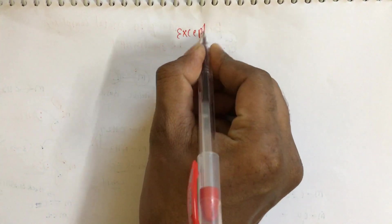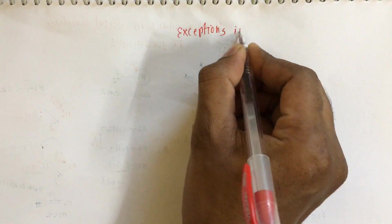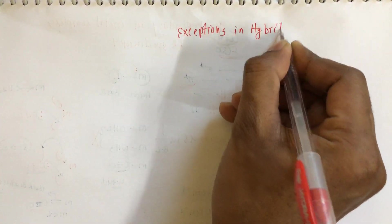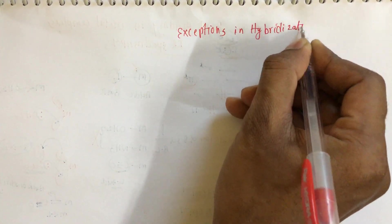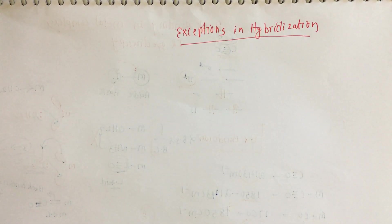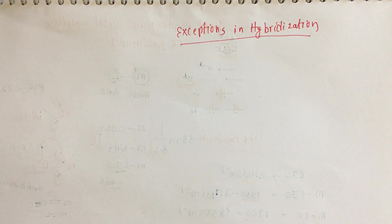The topic is exceptions in hybridization. Hybridization is one of the simplest topics we can score from easily, but there are some exceptions where we can make mistakes if we are not sure about the structure.